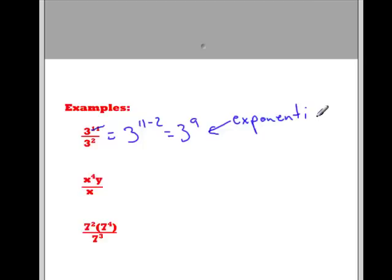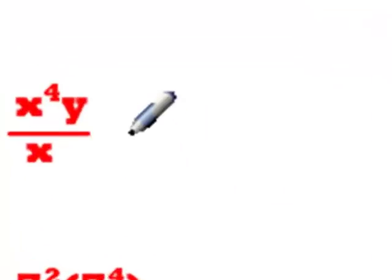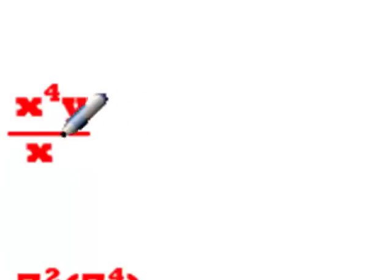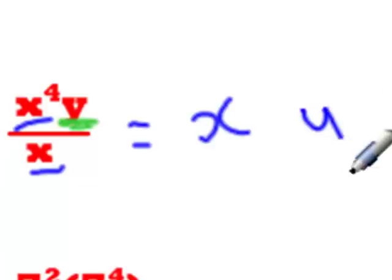I can ask you to get out your calculator and put it into standard form. Now, the next example, we're dealing with variables now. The rules for variables are the exact same as the rules for numbers. Here we have two different variables. We can only divide powers of the same base — we cannot divide the power that has the base Y, as it's a different base. So we start by writing out the bases that will remain: we'll have a base X and a base Y.